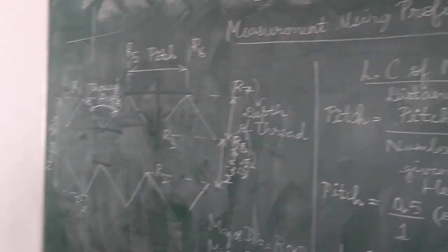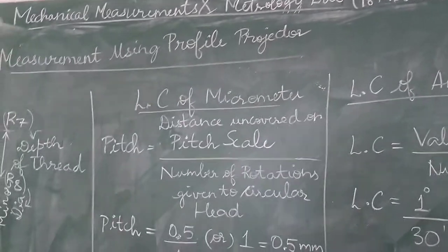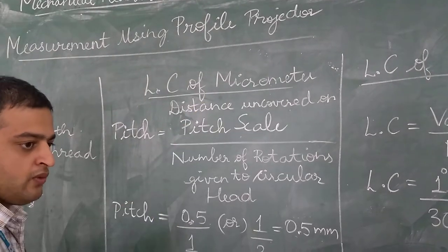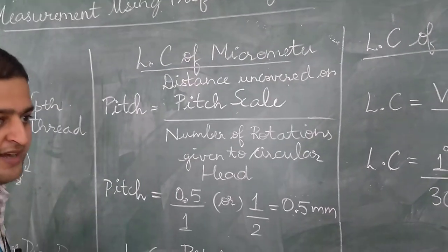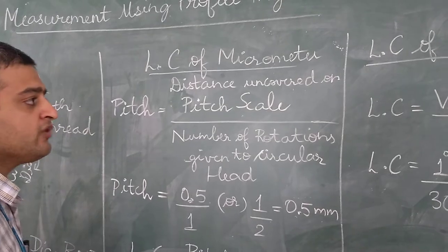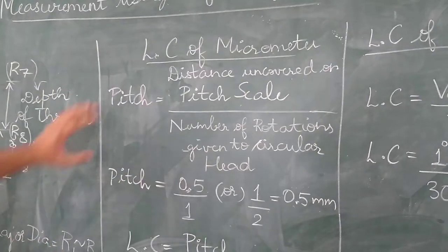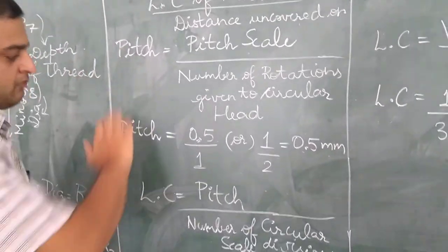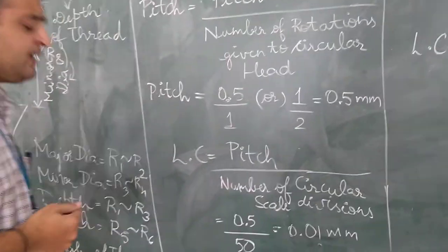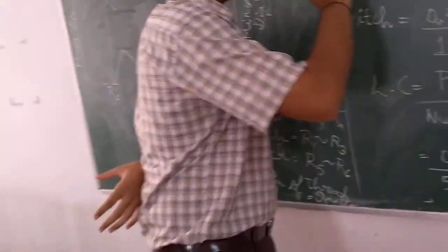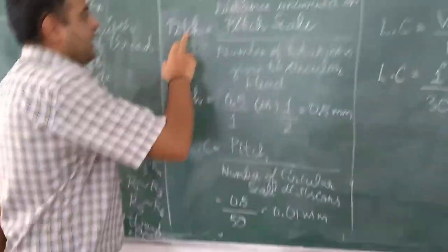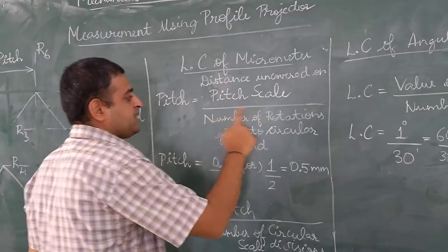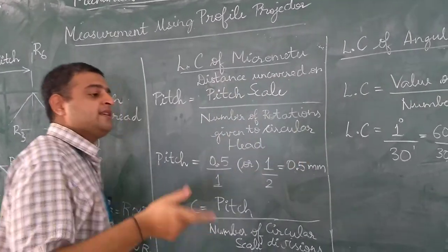Basically, there are two scales — two micrometers — which allow movement in the x and y directions. It is very important to know the least count of the micrometer you are using. To find the least count, we first need to find the pitch of the micrometer. The pitch of the micrometer is found by the distance uncovered on the pitch scale divided by the number of rotations given to the circular head.